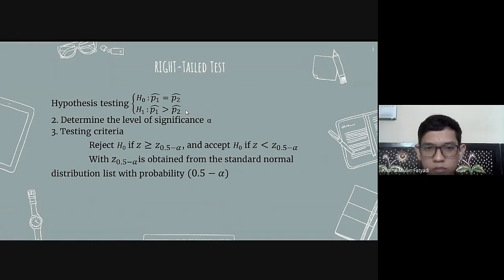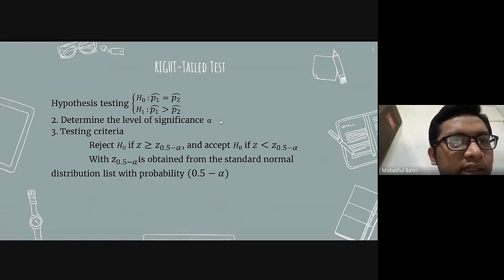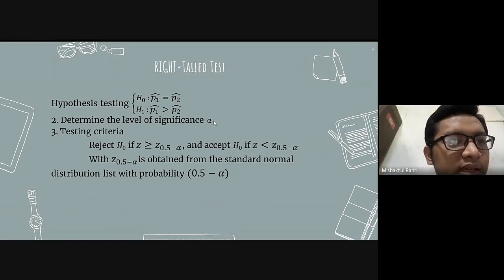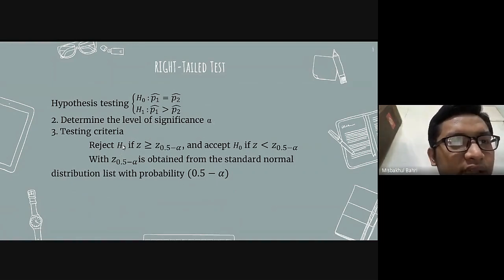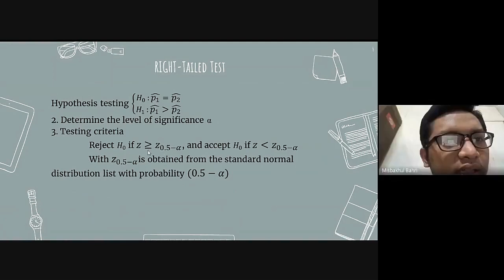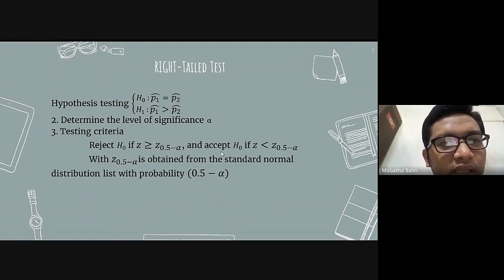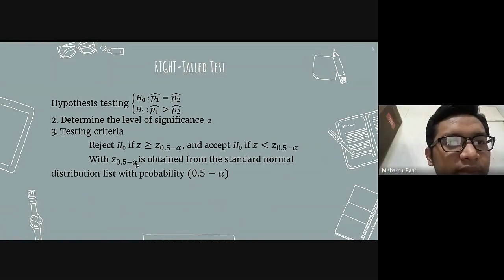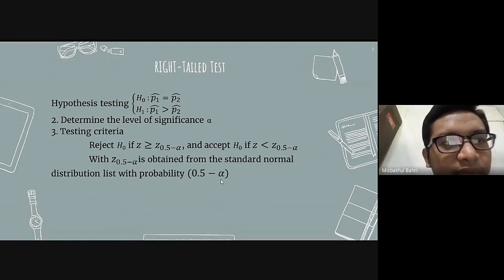For the one-tailed test, the second step is to determine the level of significance alpha. The third step, testing criteria: reject the null hypothesis if Z is greater than or equal to Z of (half minus alpha), and accept the null hypothesis if Z is less than Z of (half minus alpha). Z of (half minus alpha) is obtained from the standard normal distribution list with probability of (half minus alpha).